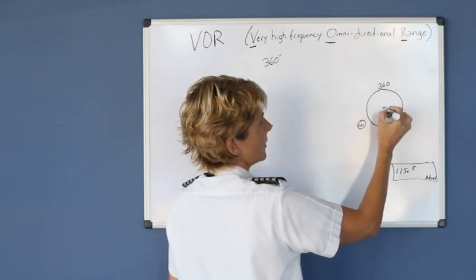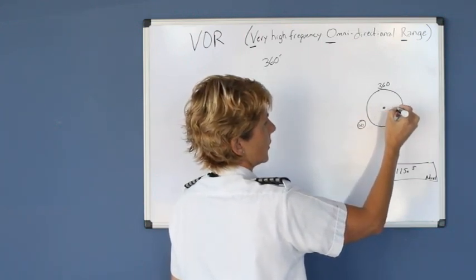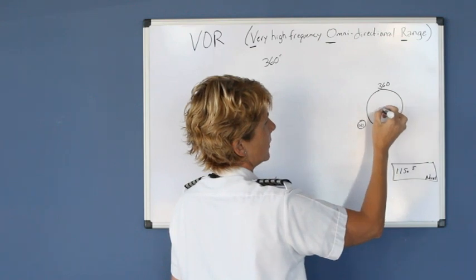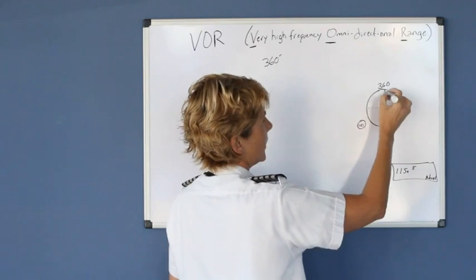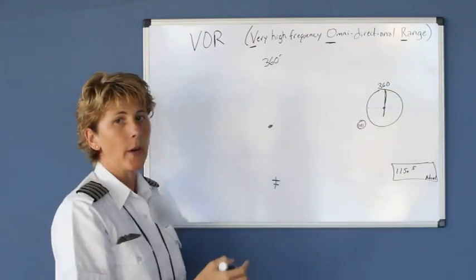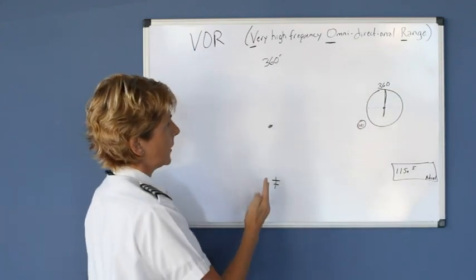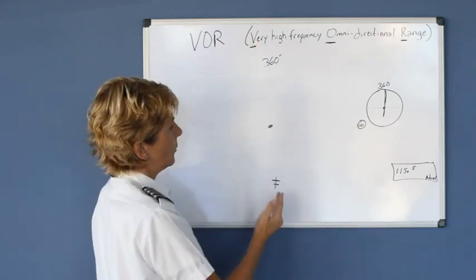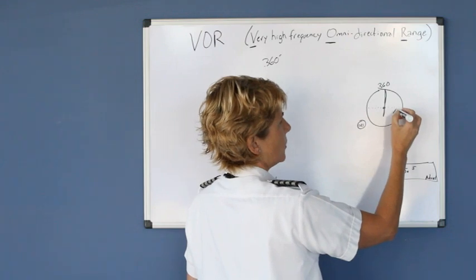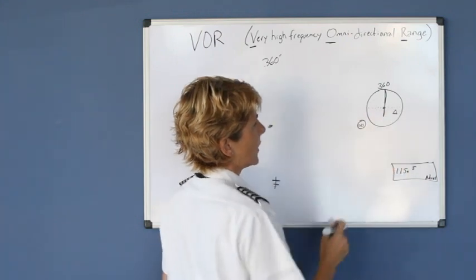In the center, there's a little circle, and then usually five dots on either side, and a needle. The needle now represents your course across the ground. So you have selected 360 degrees in relation to this station, and you're flying to the station. So it has a to indicator on the side.